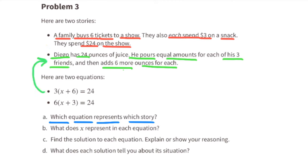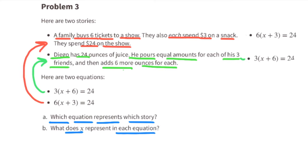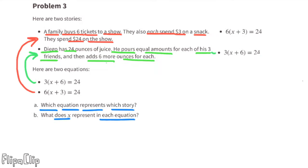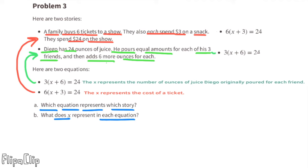The equation three times (x plus six) equals 24 represents Diego having 24 ounces of juice, pouring equal amounts for each of his three friends, and then adding six more ounces for each. Part b: for Diego, x represents the number of ounces of juice originally poured for each friend. For the family at the show, x represents the cost of a ticket.